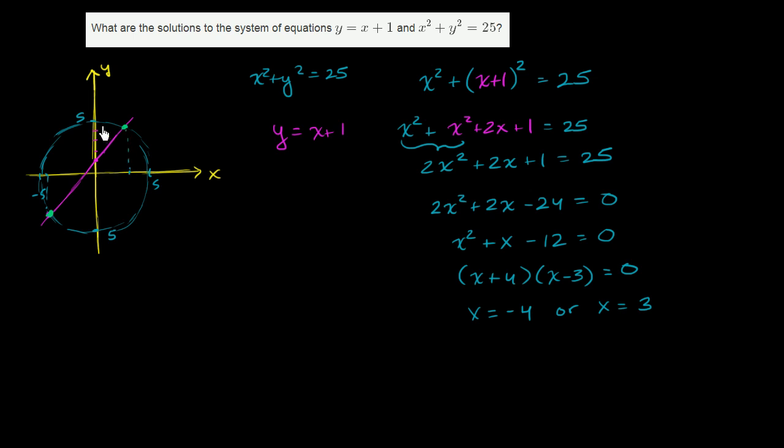So we're almost done. We just have to find the corresponding y's. And for that, we can just resort to the simplest equation right over here. y is x plus 1. So in this situation, when x is negative 4, y is going to be that plus 1. So y is going to be negative 3. This is the point negative 4 comma negative 3.